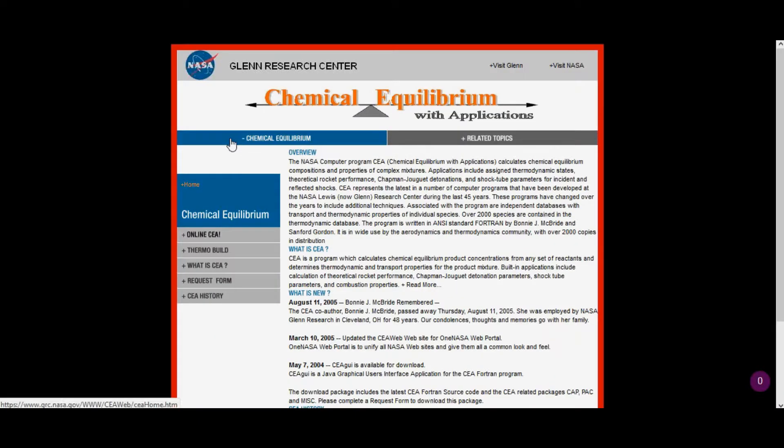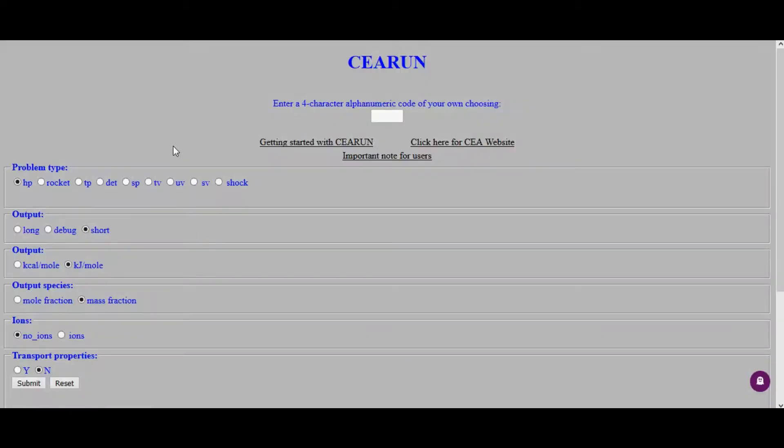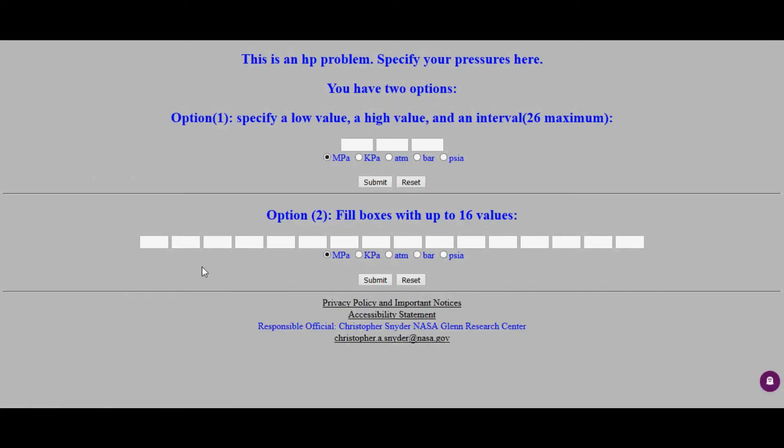Now we're online on the CEA website. If I click on online CEA, it brings us to the website I mentioned before on the whiteboard. The only thing we need to do on this page is type in a four-character alphanumeric code of your own choosing. I'll just type in Josh. We don't need to change anything over here, we'll just click submit. Now on this page, the only thing we want to specify is the stagnation pressure. We're going to use option two here. We only need to fill in one box because we know exactly what we want, so I'm going to fill in seven because our P naught is seven megapascals. Click submit.